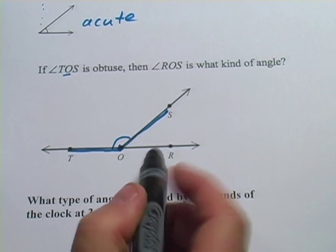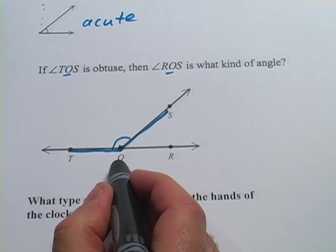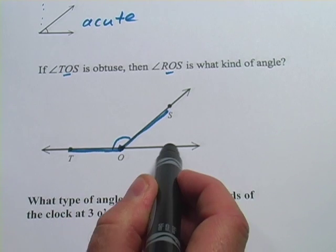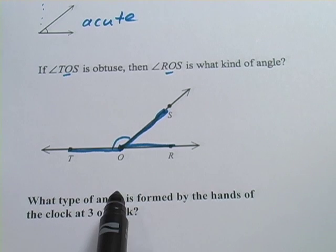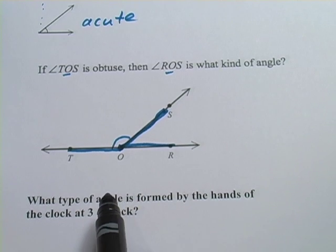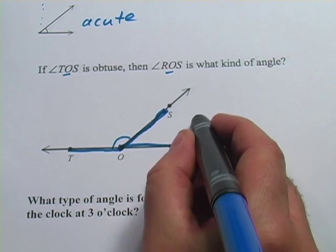Then angle ROS. Well, O is in the middle, so that's the point of the angle. So ROS is this one. Then ROS is what kind of angle? And in this case, just by looking at it, you can probably tell it's acute.